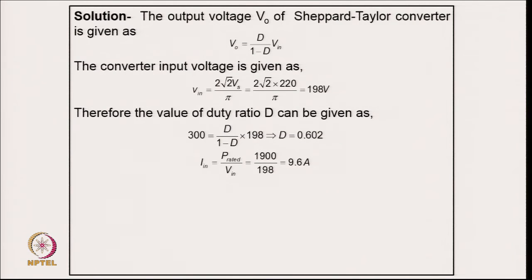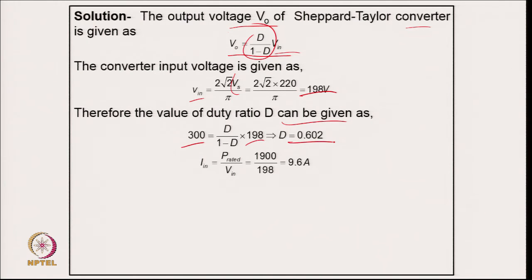Coming to the numerical part: the output voltage of the Zeta converter uses the buck-boost relation. The average input voltage after the diode rectifier is 198 V from 220 V RMS. Putting in the output voltage of 300 V and input of 198 V gives a duty cycle of D = 0.602, above 0.5, confirming boost mode. The average input current is 1900 / 198 = 9.6 A.